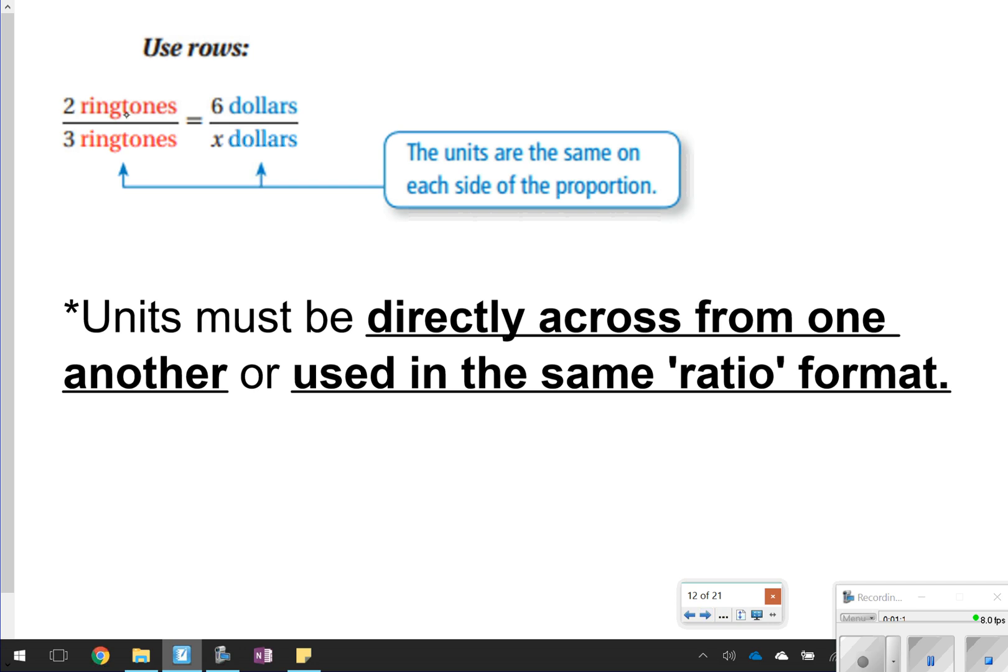Notice how I still kept the two ringtones to $6 on the same row, and that would be writing it as a ratio like this. But then you could also put underneath it the new one. Since I put two ringtones here, that means the three ringtones would go underneath it, and across from it would be the X dollars. So that's just another way to do it. If you want to write it that way, you can.